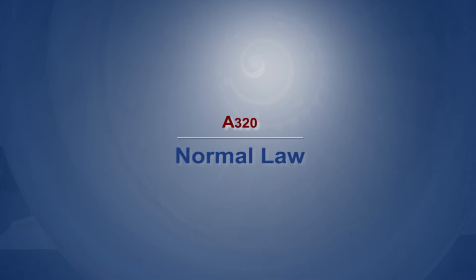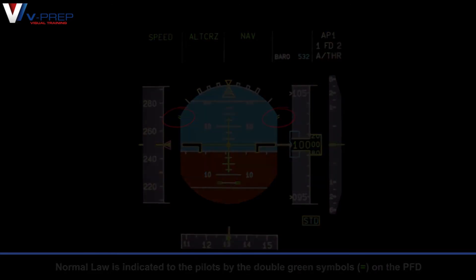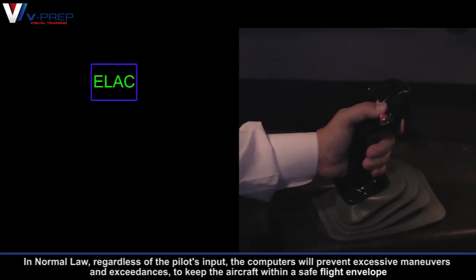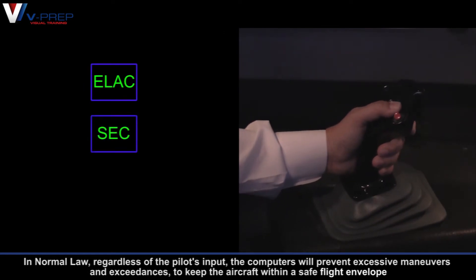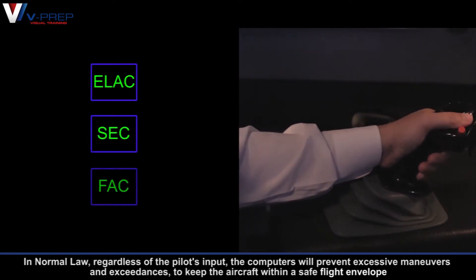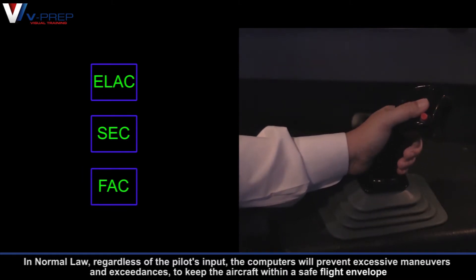A320 Normal Law. Normal law is indicated to the pilots by the double green symbols on the PFD. In normal law, regardless of the pilot's input, the computers will prevent excessive manoeuvres and exceedances to keep the aircraft within a safe flight envelope.